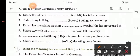The fourth one is, Kamal has a washing machine. Yet or but, he has never used it. Kamal has a washing machine. But, he never used it. Fifth one is, please stay with us. And, tell us a story.